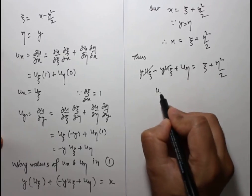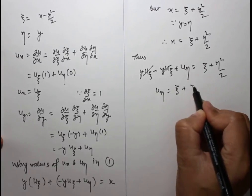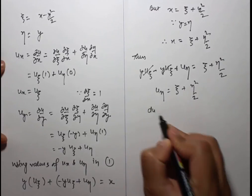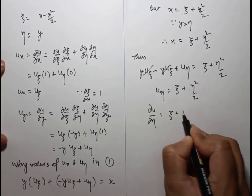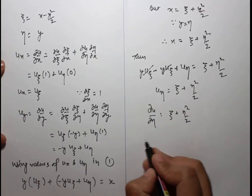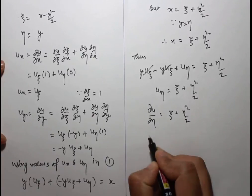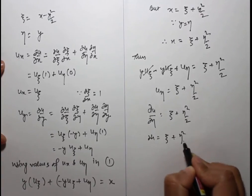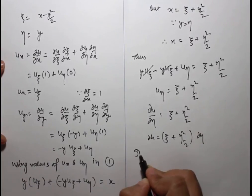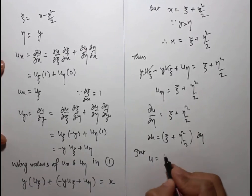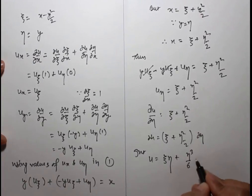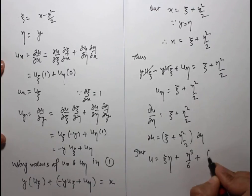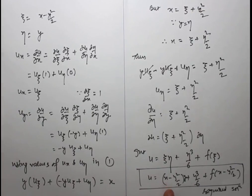The y·u_ξ terms cancel, giving u_η = ξ + η²/2, i.e., ∂u/∂η = ξ + η²/2. Integrating with respect to η: u = ξη + η³/6 + f(ξ). This is the general solution in canonical form.